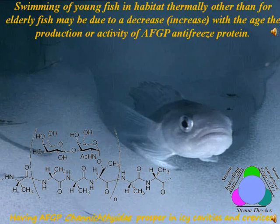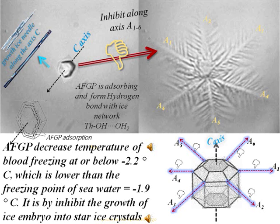Swimming of young fish in thermally different habitats from elderly fish may be due to a decrease or increase with age in the production or activity of AFGP antifreeze protein. Having AFGP, ice fish Chaenichthyidae prosper in cavities and crevices in ice. AFGP decreases the temperature of blood freezing at or below −2.2°C, which is lower than the freezing point of sea water equal to −1.9°C, by inhibiting the growth of ice embryos into star ice crystals. AFGPs adsorb and form hydrogen bonds with the ice network.